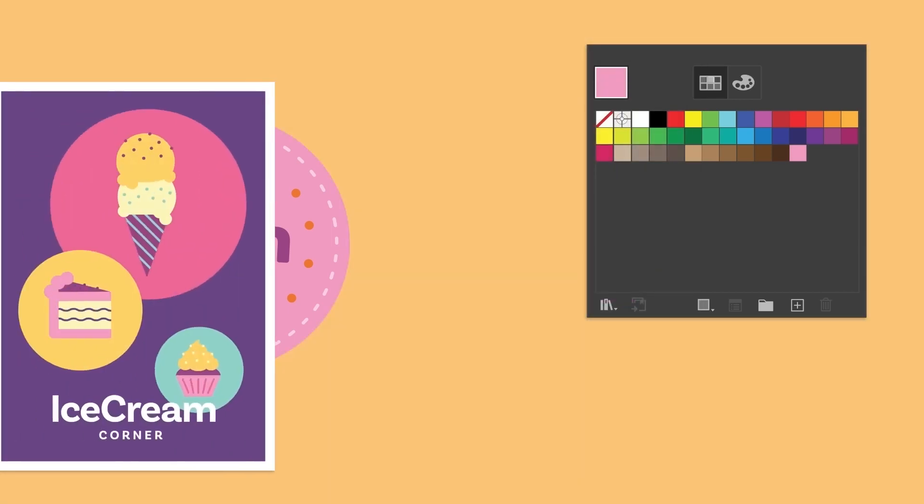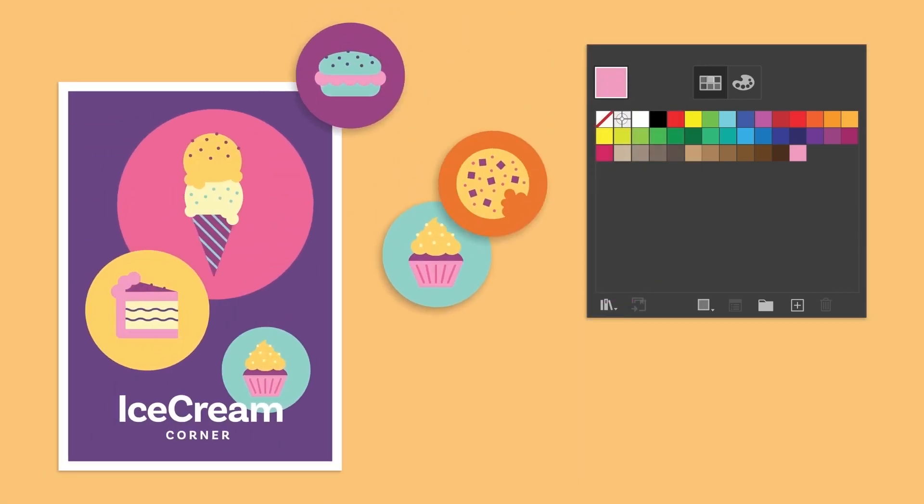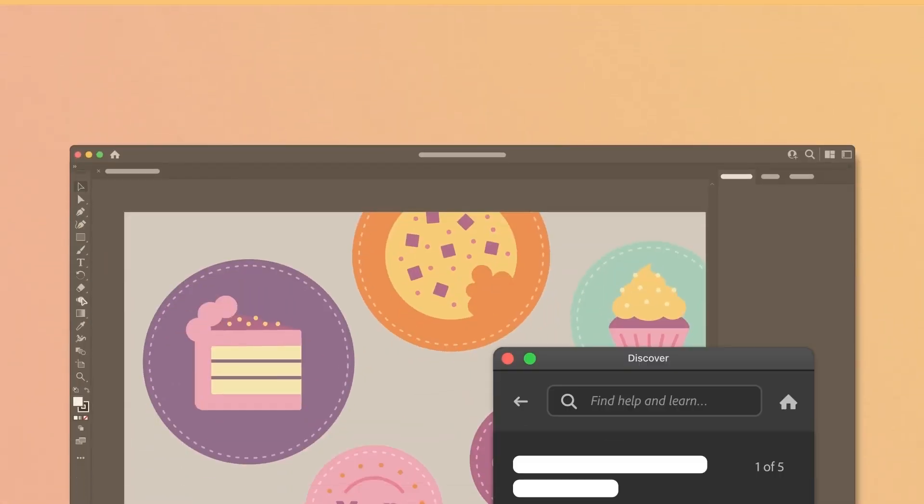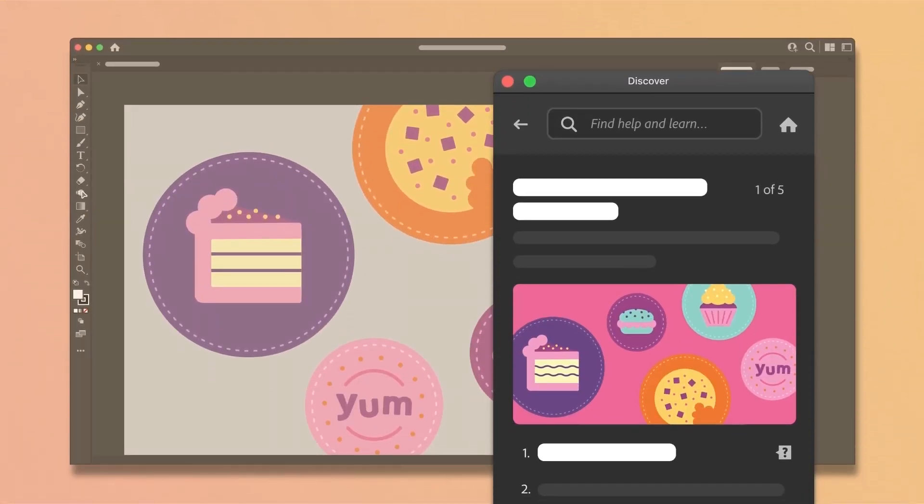So to recap, in Illustrator, you can create colors in different ways depending on what you need and save them as swatches to reuse them to make your life easier. Now it's your turn. Start this tutorial with step-by-step instructions to practice making and adding color to artwork.